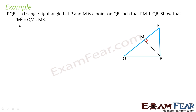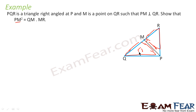We have to prove that PM² is equal to QM by MR. So if you see the sides we are talking about — PM appears twice, and QM and MR. So if you join these two sides you get one triangle, and if you join these two sides you get another triangle. So I am talking about triangle 1 and triangle 2. So if I can prove that PM/MQ is equal to MR/PM, my problem is solved.